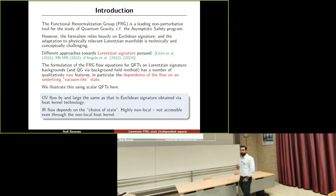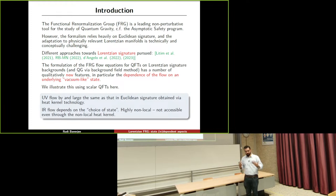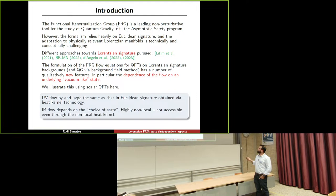The FRG is a leading non-perturbative tool for the study of quantum gravity, as used in the Asymptotic Safety Program. But the formalism relies heavily on Euclidean signature. As was discussed by Bianca, we need to wean ourselves off Euclidean signature and think seriously about Lorentzian aspects. The adaptation to the physically relevant Lorentzian manifolds is technically and conceptually challenging. Nonetheless, in the past few years there has been some urgency on this matter, and several research groups have pursued Lorentzian signature flow equations.